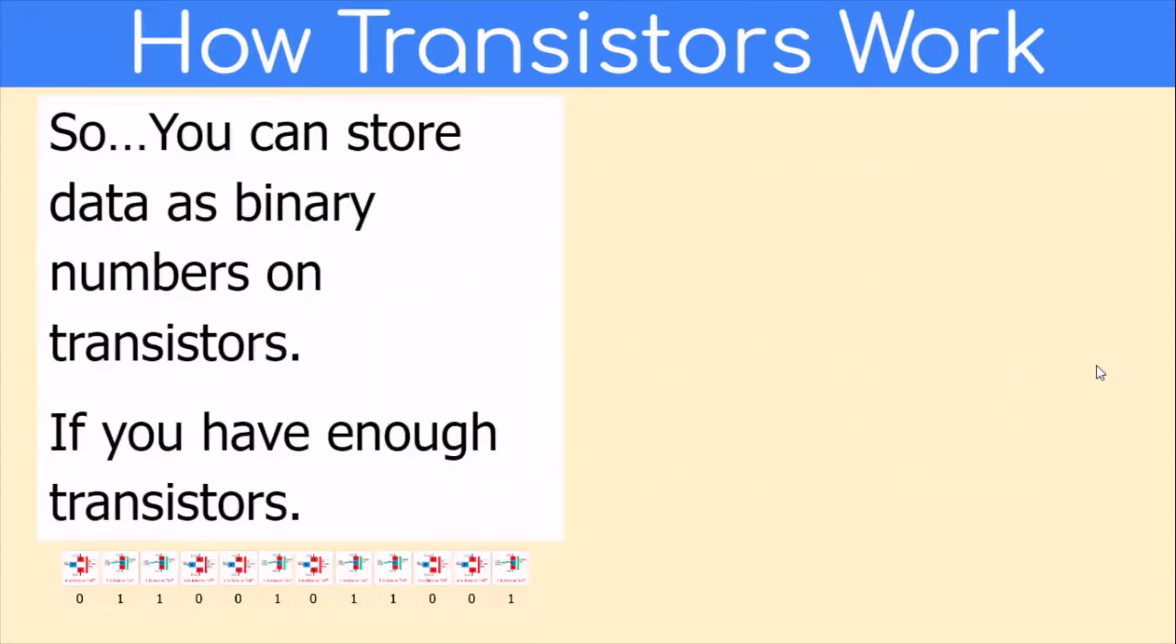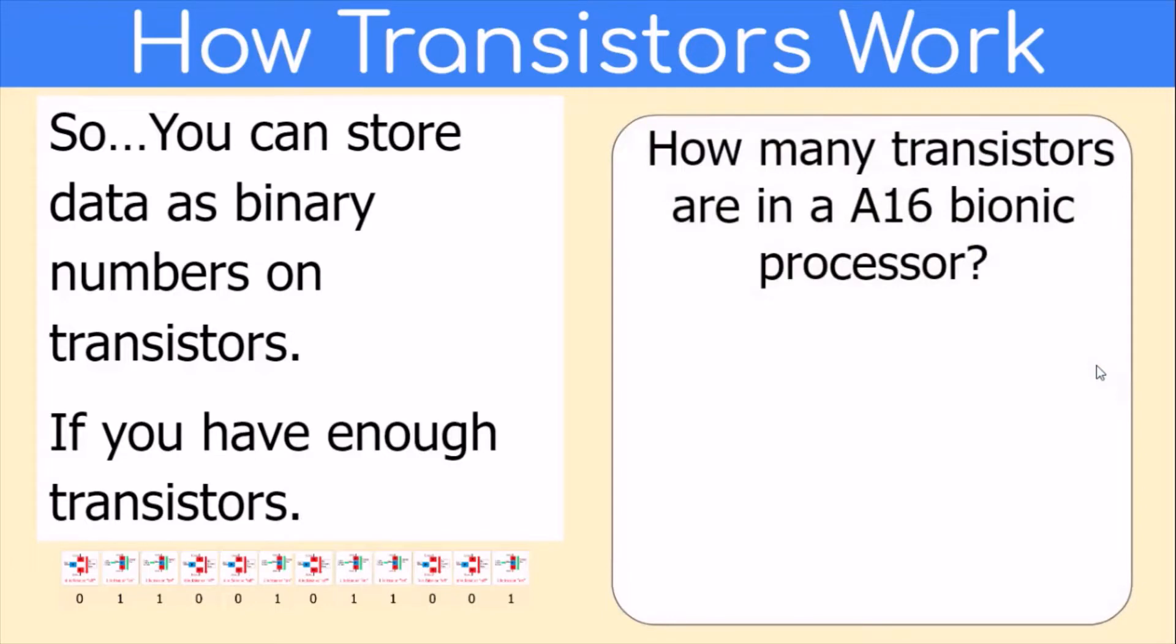So you can store data as binary numbers on transistors if you have enough transistors. How many transistors do you think are in an Apple A16 Bionic processor?